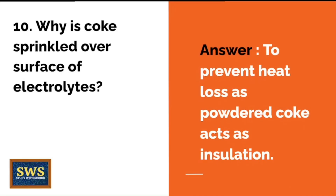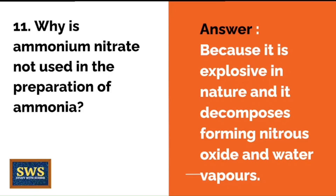Why is coke sprinkled over the surface of electrolytes? To prevent heat loss, as powdered coke acts as insulation. Why is ammonium nitrate not used in the preparation of ammonia? Because it is explosive in nature and decomposes, forming nitrous oxide and water vapors.